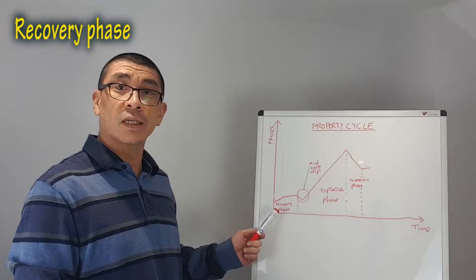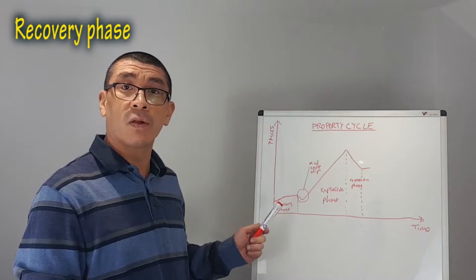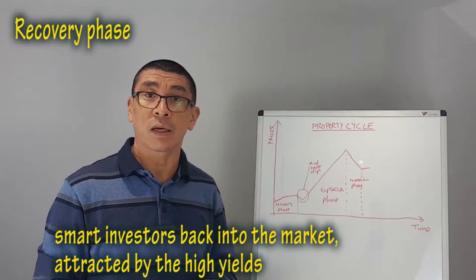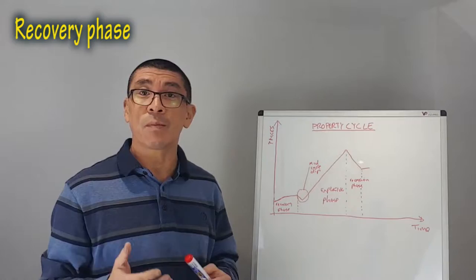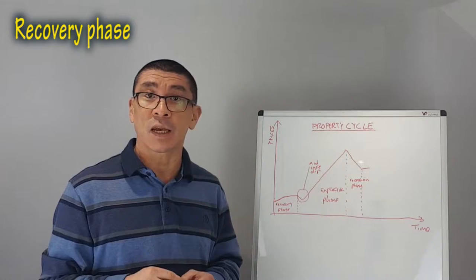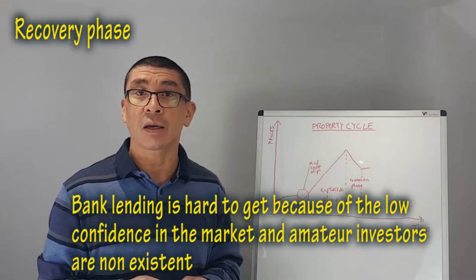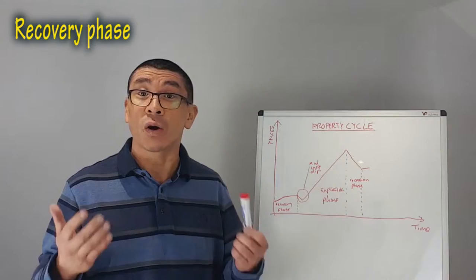In the recovery phase, prices have bottomed out. At the end of the recession, prices have fallen far enough to tempt the smart investors back into the market, attracted by the relatively high yields. You've got to remember the property prices have dropped, but the rent is relatively the same. Bank lending is hard to get because of the low confidence in the market, and amateur investors are non-existent because of all the doom and gloom in the economy.